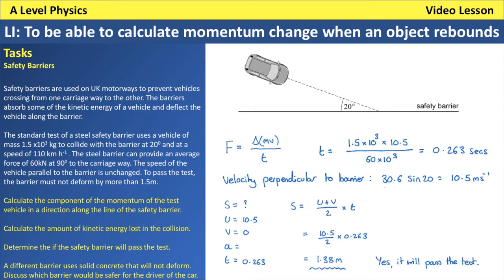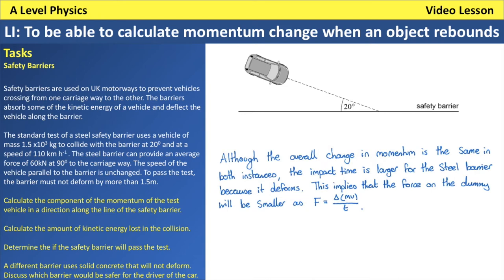Task four: comparing the steel barrier to a solid concrete barrier. Regardless of which barrier is hit, the change in momentum of the car is the same in both cases. However, the steel barrier deforms, which increases the impact time. Since force equals change in momentum divided by time, a larger time gives a smaller force on the occupants. Therefore, the steel barrier is safer for the driver than a concrete barrier.